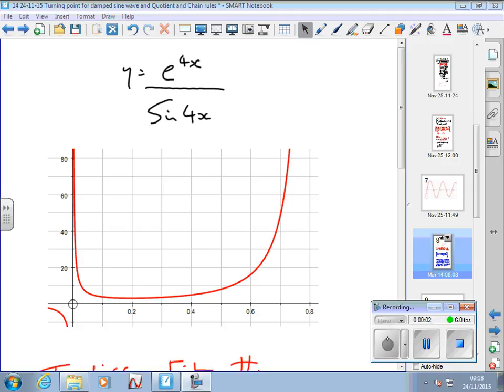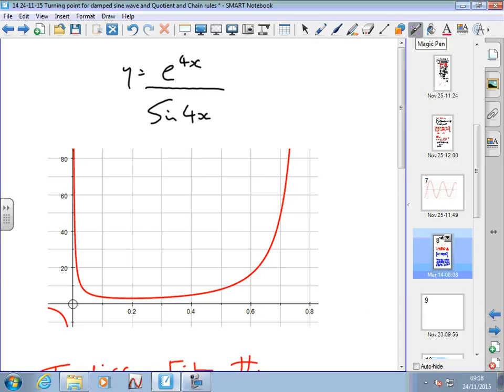Let's have a look at this function: y equals e to the 4x over sine 4x. x appears twice, so I've got two separate functions involving x. I can't combine the two or multiply out any brackets to just get x's on their own. I've got two completely separate functions—an exponential function and a sine function—which in themselves are very easy to differentiate.